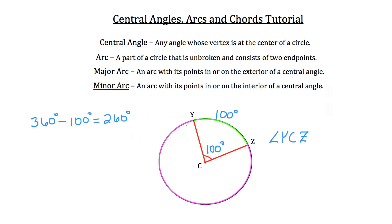So for this problem, that would be the purple arc all the way around. Now, when you're writing arcs in geometry, for example, the minor arc is Y, Z. And when you're drawing them in geometry, you always draw a little arc over that to indicate that you're referring to an arc. Now, sometimes it's more difficult to indicate the major arc.